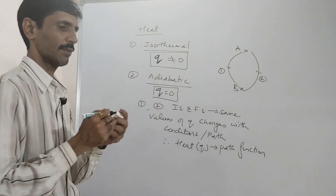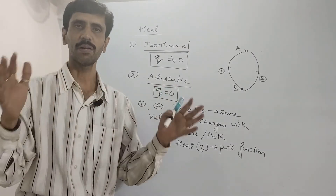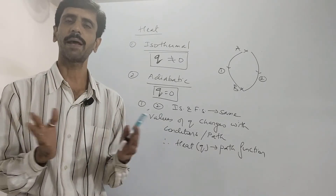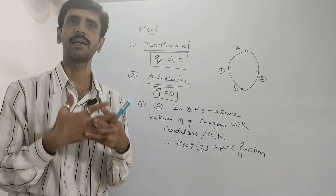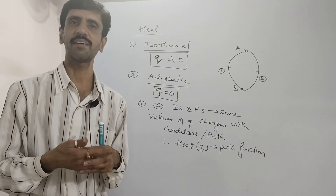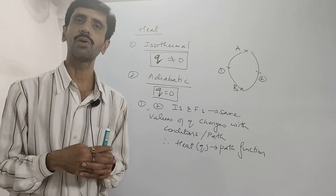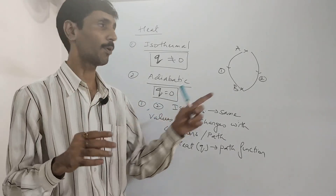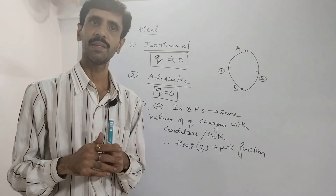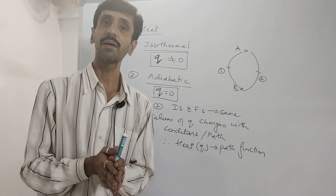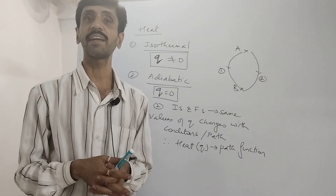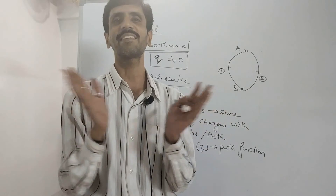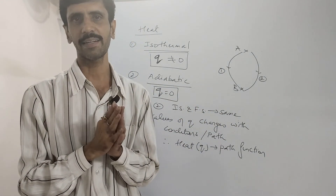In this chapter, work and heat are the two path functions. Other parameters — enthalpy, entropy, internal energy, pressure, volume, temperature and so on — out of these, only work and heat are path functions. They depend upon the path followed; in other words, they do not depend upon the initial state and the final state.